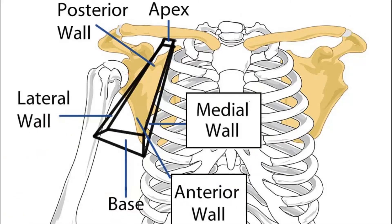Moving on to the axillary region. The axillary region has got an apex, a base, and four walls: a posterior wall, a lateral wall, an anterior wall, and a medial wall.